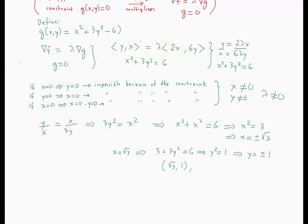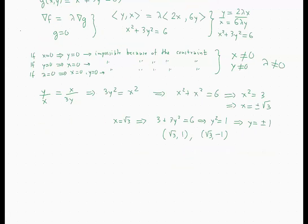If x = −√3, we have exactly the same situation: 3 + 3y² = 6, so 3y² = 3, meaning y² = 1 and y = ±1. This yields two more points: (−√3, 1) and (−√3, −1). These are the four critical points of the function on this domain.